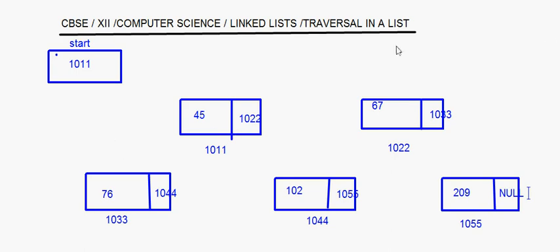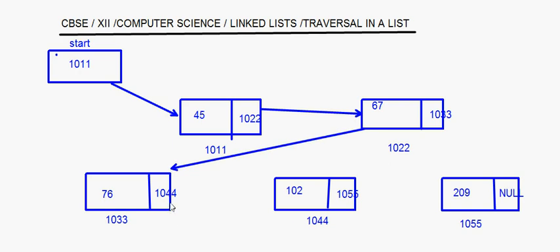The list is ready. The links are like this: this node is pointing to this, this is pointing to this, and so on. Now we have to do traversal in the list. First, let's look at the logic and algorithm for that, then let's convert that into C++ coding.